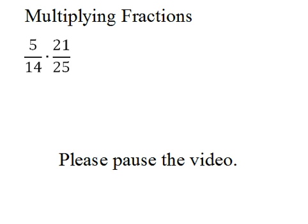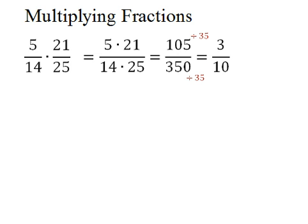Okay, welcome back. Hopefully, you had a chance to go through this and come up with a solution. Now, the most straightforward way to handle this problem is to just multiply across the top and bottom. The problem is you end up with really large products. Here, if you just multiply 5 times 21 and 14 times 25, you get 105 over 350.